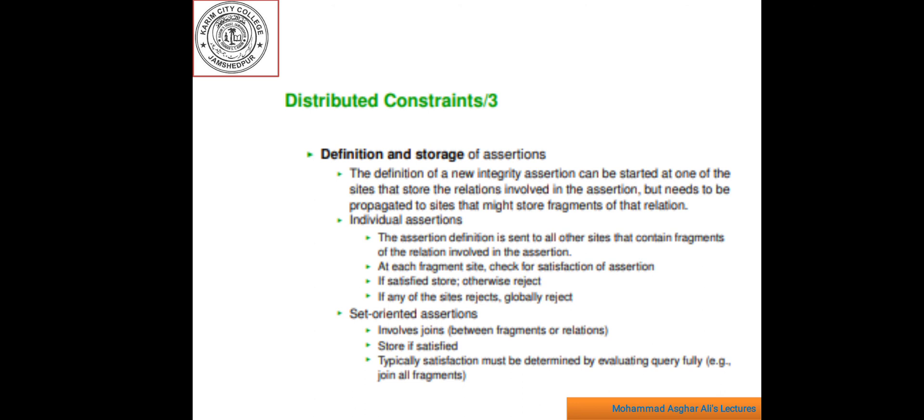Now, the next is enforcement distributed integrity assertions. Enforcing the distributed integrity assertions is more complex than needed in centralized DBMS. The main problem is to decide where to enforce the integrity assertions. The choice depends on the class of the assertion, the type of update and the nature of the site where the update is issued. The definition of a new integrity assertion can be started at one of the sites that store the relation involved in assertion but need to be propagated to site that might store the fragment of that relation. It is divided into types of strategy according to the criteria.